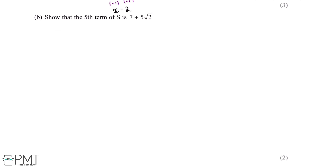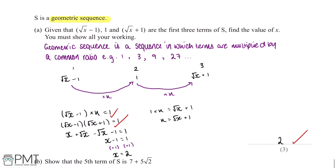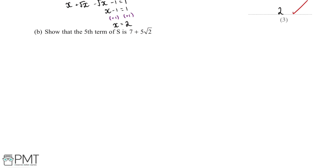Show that the fifth term of S is 7 + 5√2. In part A we were told that term 1 is √(x−1), term 2 is 1, and term 3 is √(x+1), and we worked out that x = 2. So term 1 = √2 − 1, term 2 = 1, term 3 = √2 + 1, and term 4 is unknown.